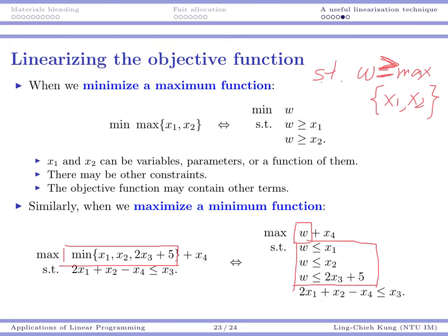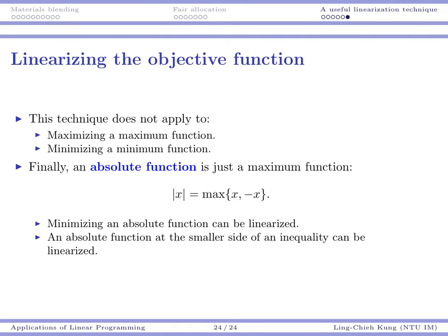One additional thing: if I am maximizing a negative maximum function, I can do the same thing. Because the negative of a maximum function is nothing but a minimum function. The direction must be correct — you cannot linearize the case of maximizing a maximum function or minimizing a minimum function; the technique does not apply.